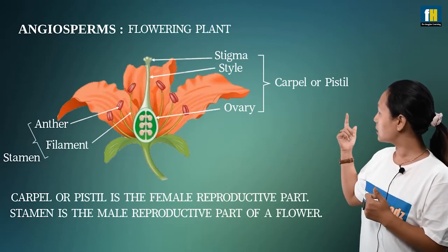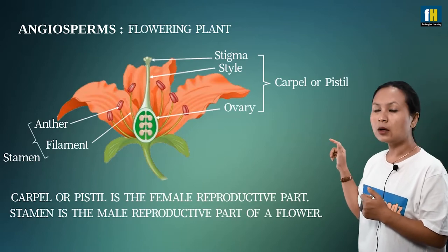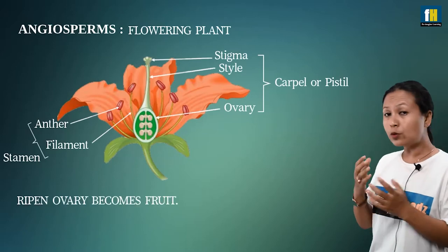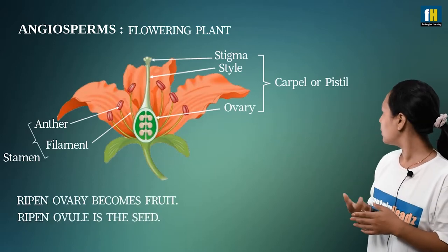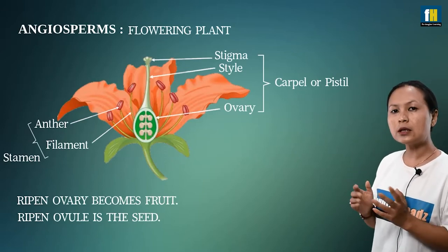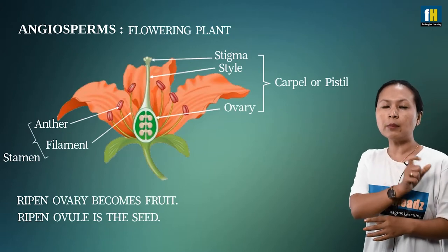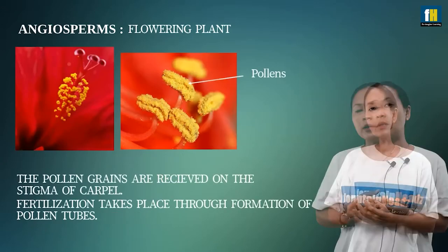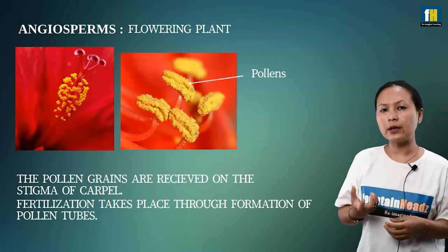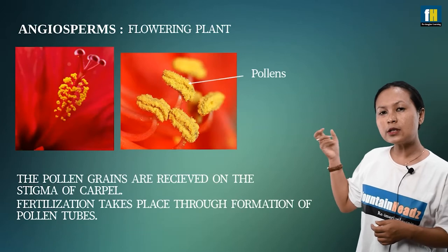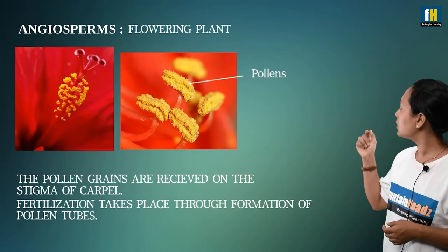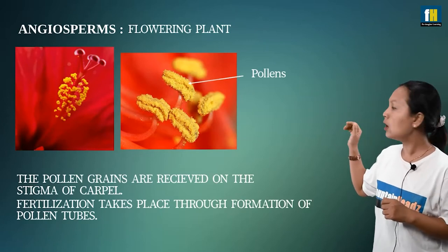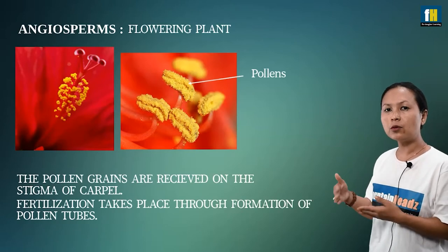The carpel contains the ovary, which is the swollen basal part. Inside the ovary are ovules. The ovary develops into the fruit and the ovule develops into the seed. So in flowering plants, the ripened ovary becomes the fruit and the ripened ovule becomes the seed. Fertilization occurs when pollen grains — the yellow powdery substance — are transferred to the stigma, the sticky receptive organ, allowing fertilization to produce fruit and seed.